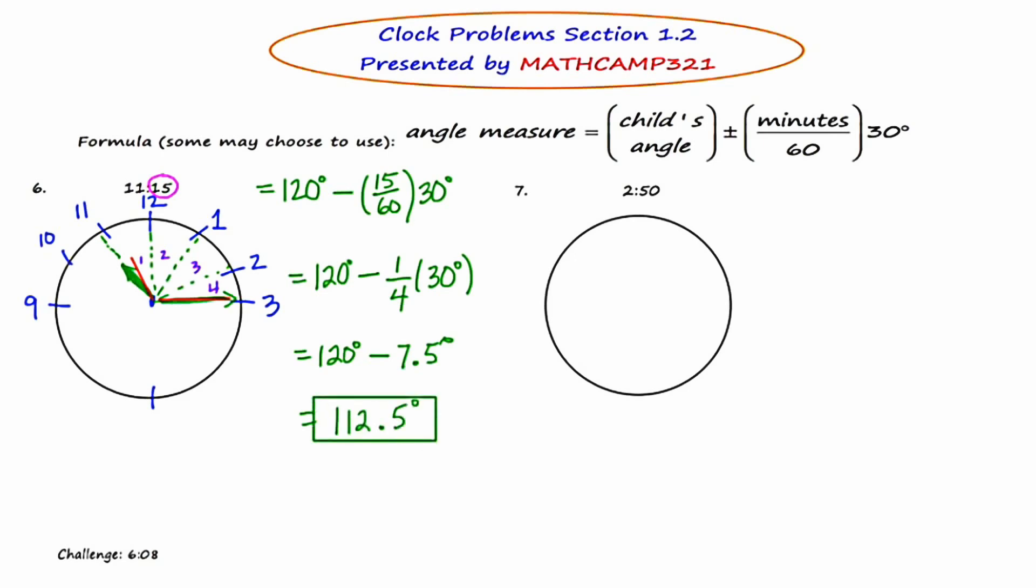Okay, and for our last example, we have 2:50. So let's start by setting the clock up. Okay, let's establish the child's angle. The child is going to think that at 2:50, the big hand faces the 10, and that the little hand faces the 2.